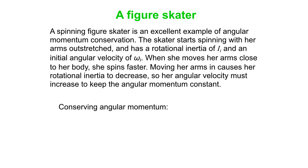Conserving angular momentum means L-initial equals L-final, where L is our symbol for angular momentum. Expanding these out, we get I-initial times omega-initial equals I-final times omega-final. What's happening when she moves her arms close is that I-final is less than I-initial, so omega-final must be greater than omega-initial. She spins faster.